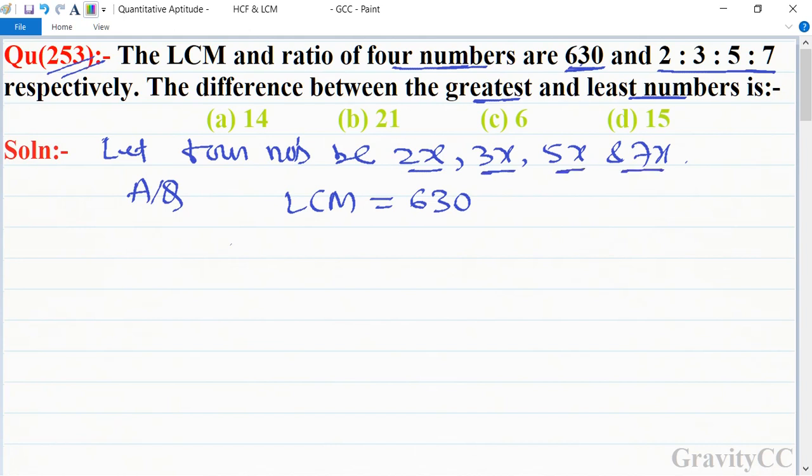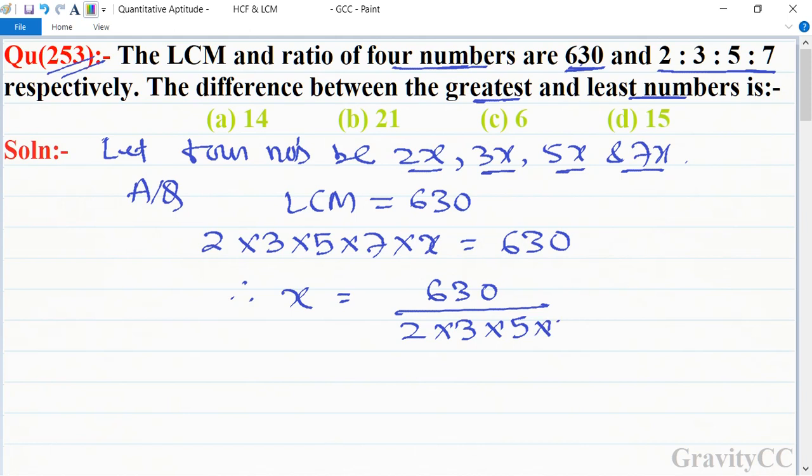The LCM of 2x, 3x, 5x, and 7x is 2×3×5×7×x = 630. Therefore, x = 630/(2×3×5×7). So cancel by 7...